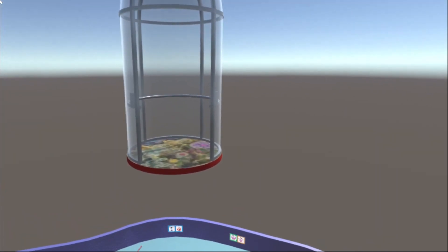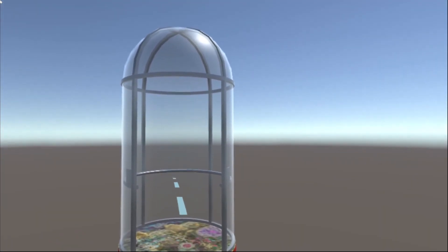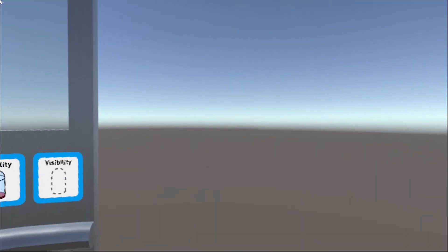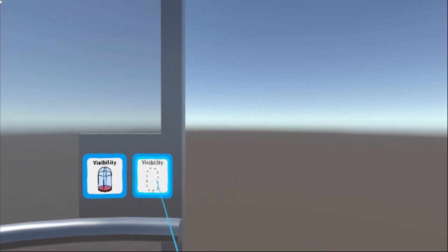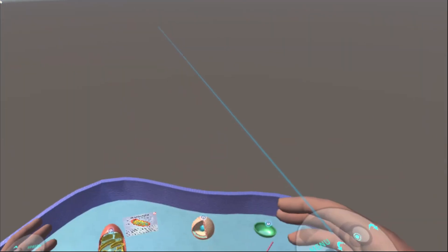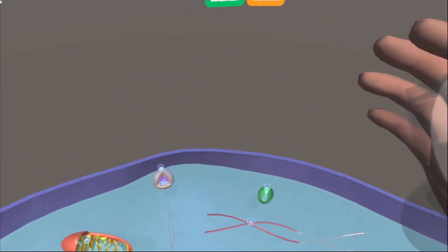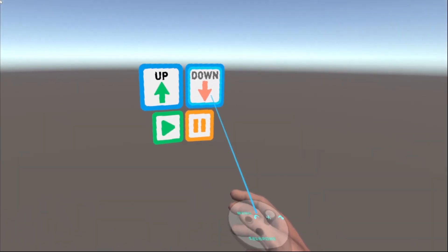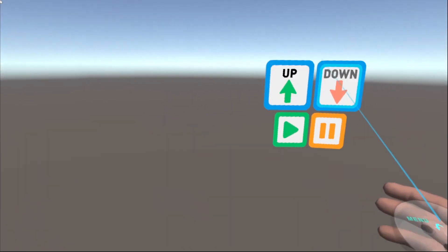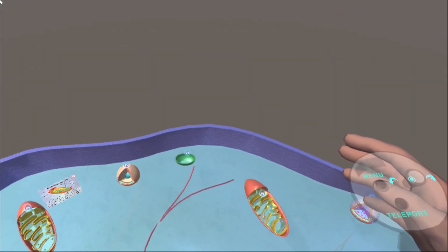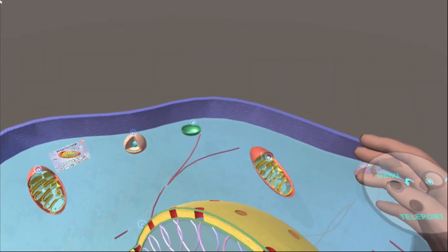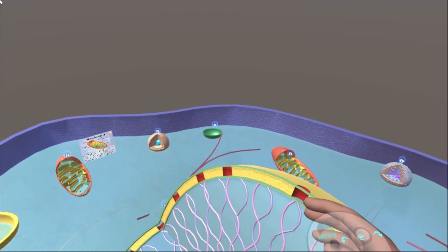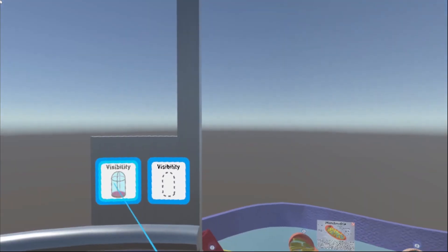Once we're done up here, we can teleport back into our cellovator. Another cool thing about our cellovator is that we can actually hide it at any point. We feel like we are totally floating up here. So we'll ride down in the invisible cellovator. But of course, I can turn it back on at any point.